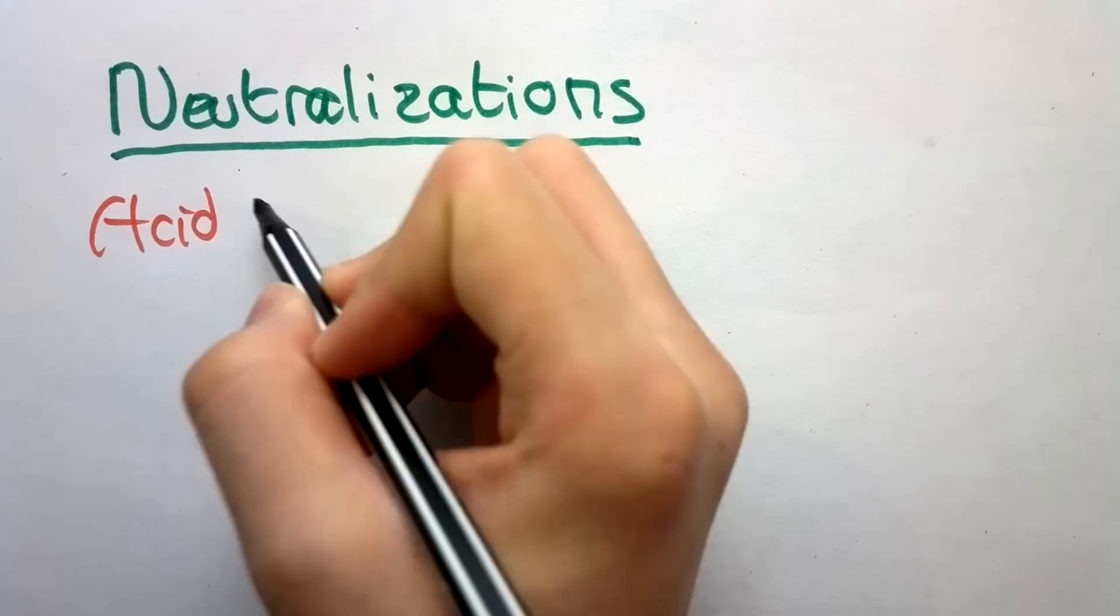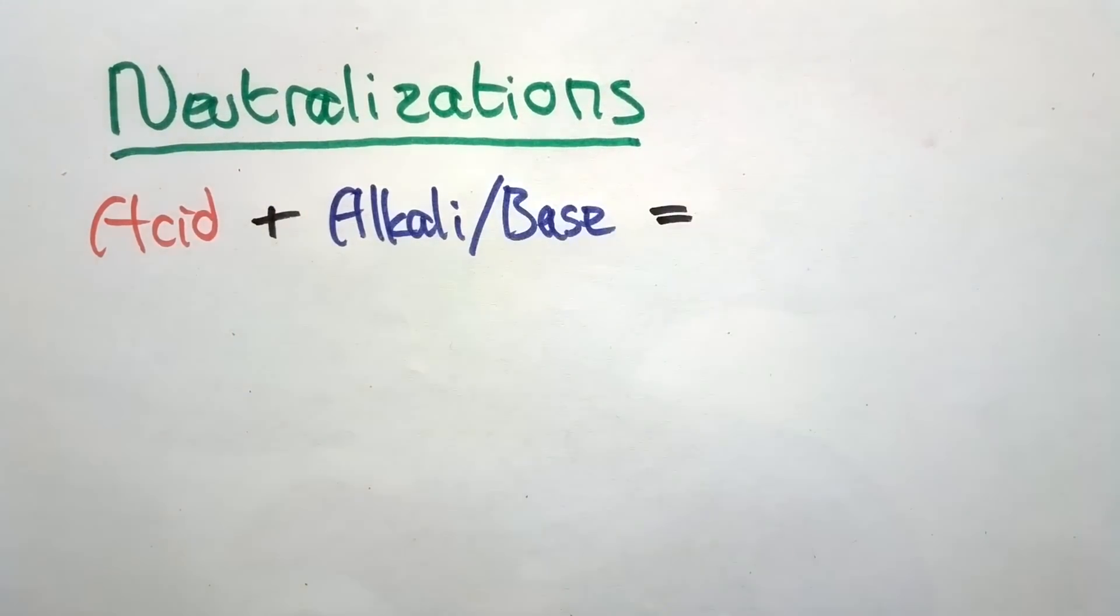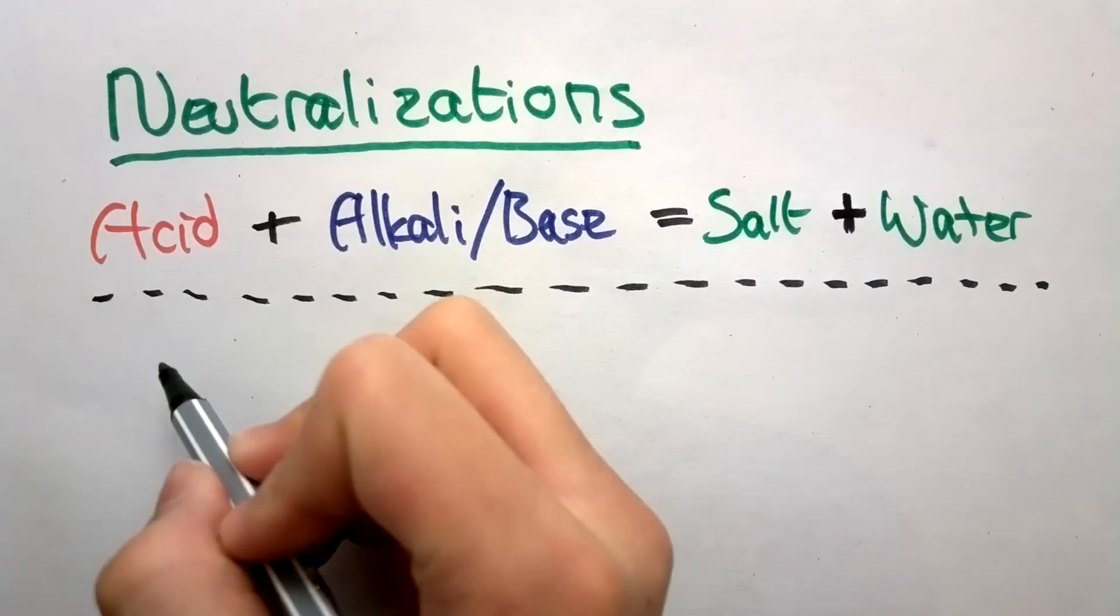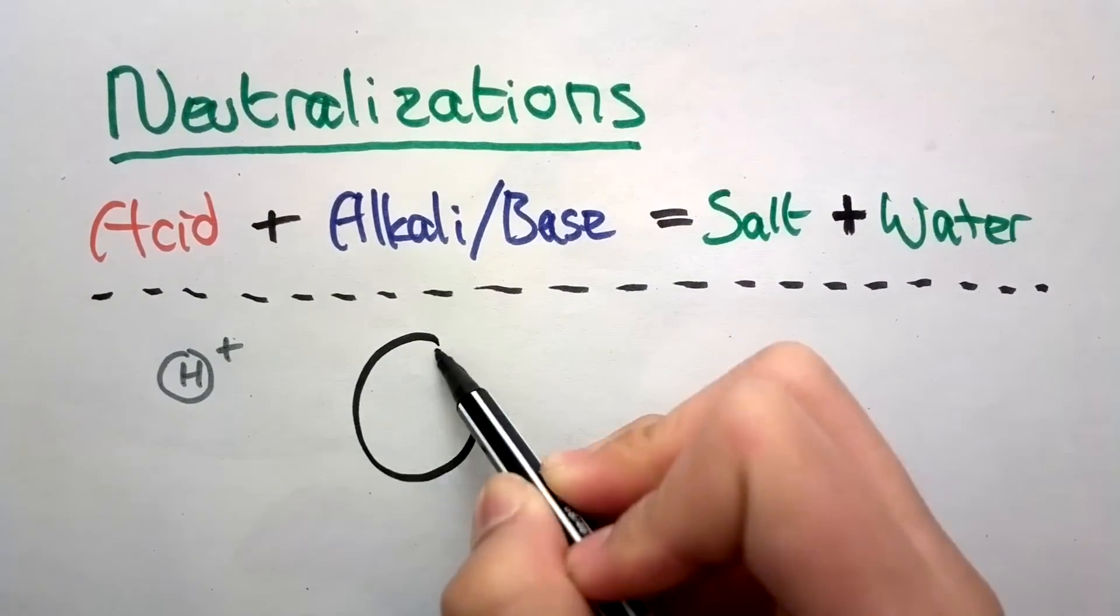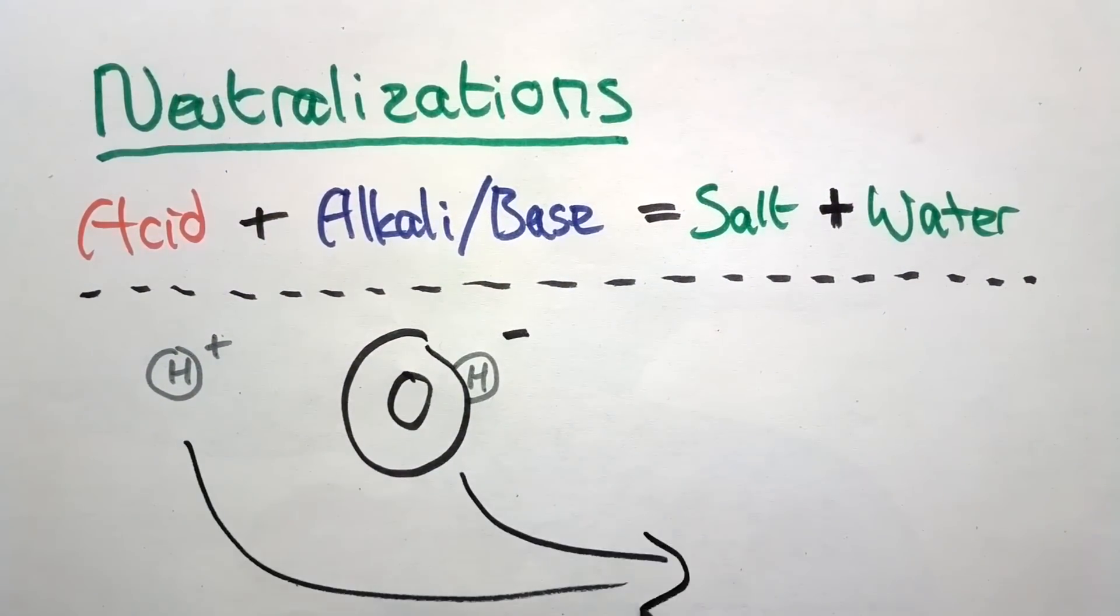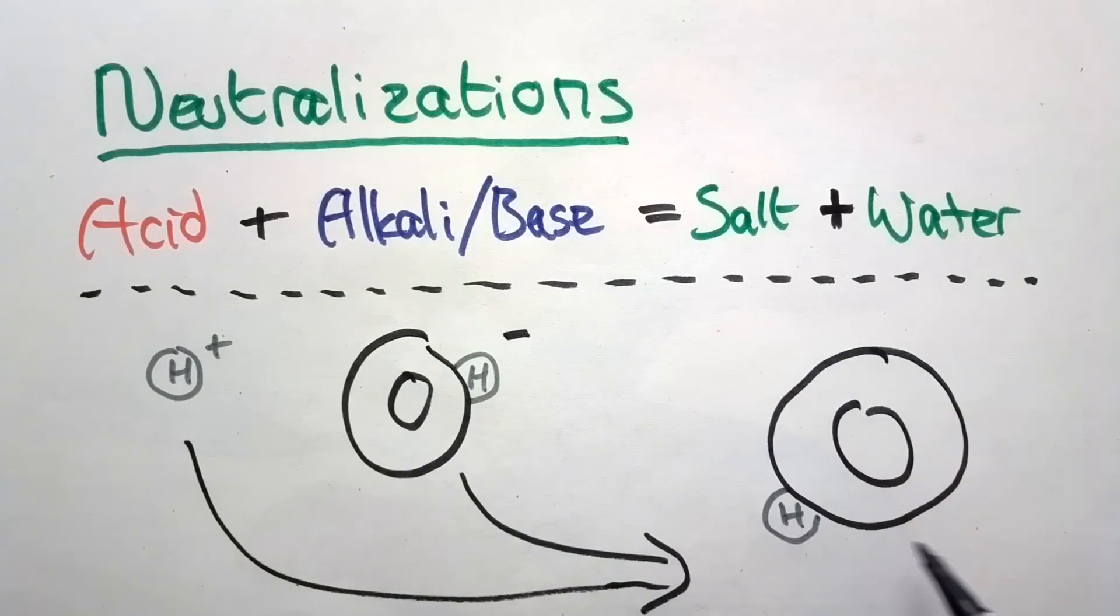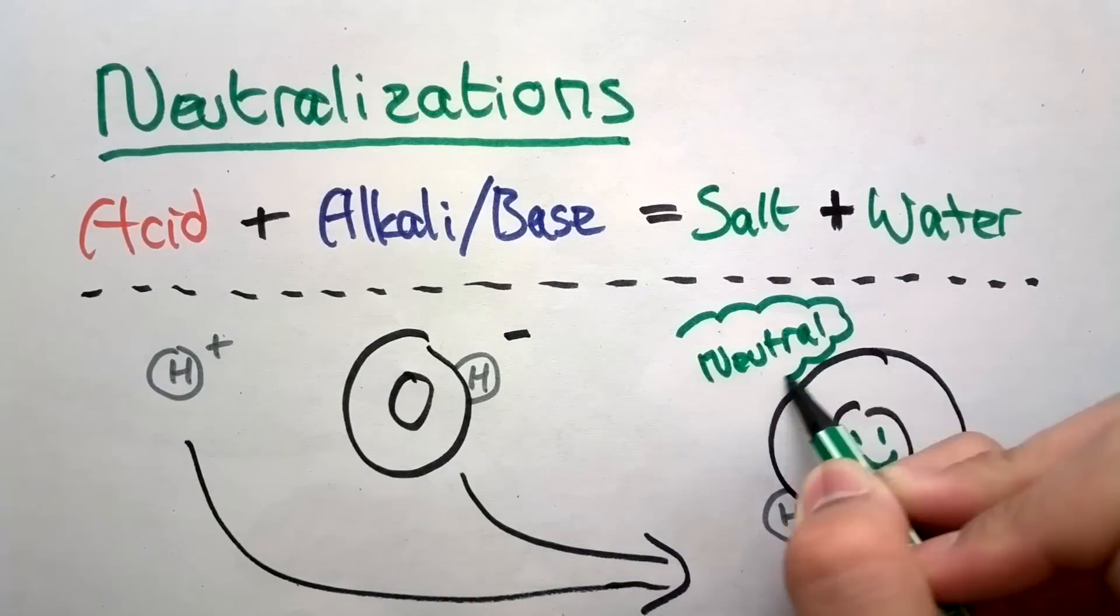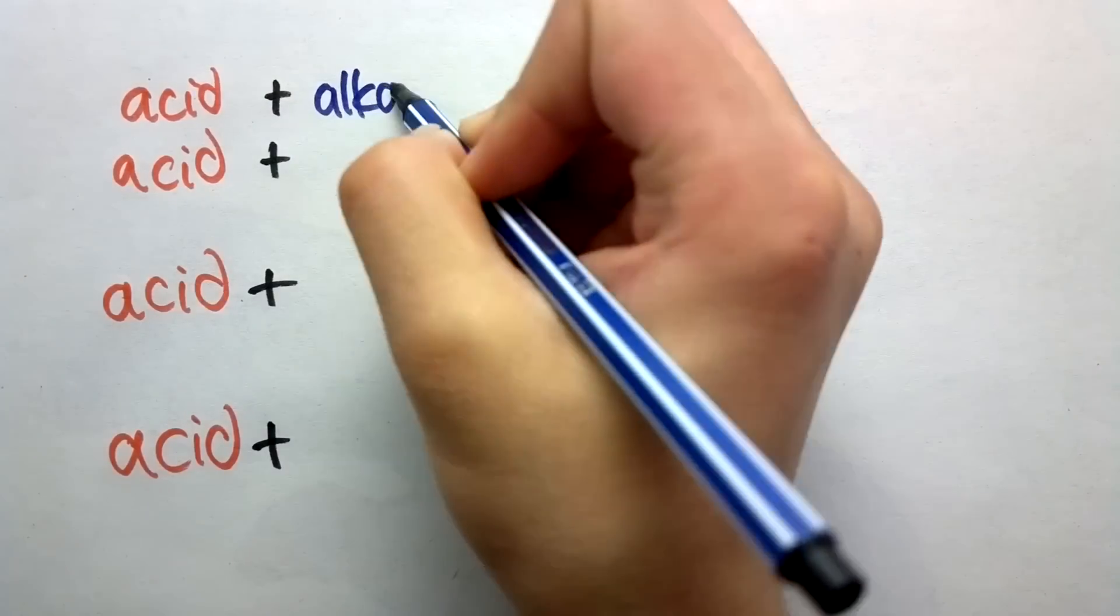Now, in neutralizations, if an acid and an alkali or base react, they make salt and water, because the hydrogen ion from the acid combines with the hydroxide ions from the alkali to make two parts hydrogen and one part oxygen, which is water. But this is not always the case.